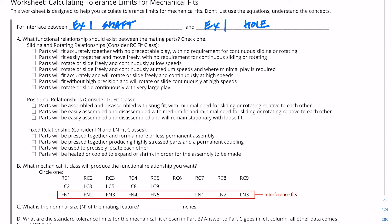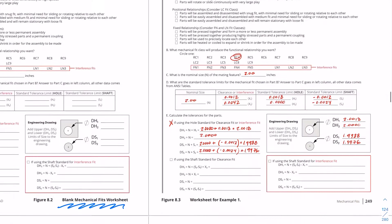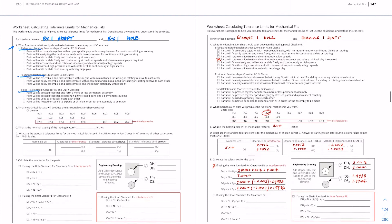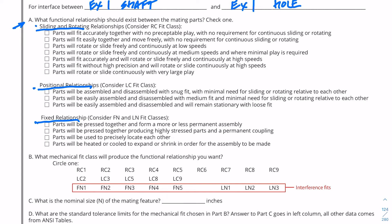What we need to do is figure out: A, what functional relationships should exist between the mating parts? We basically get to choose here. We're going to start at the kind of superset up here — do we want sliding and rotating? Do we want positional relationships? Or do we want a fixed relationship? We're going to have to go back to the problem. The system is to be used on a machine with medium running speeds and where minimal play is desired. So this means we are going to have sliding and rotating relationships — medium speeds where minimal play is desired.